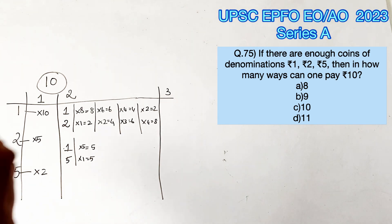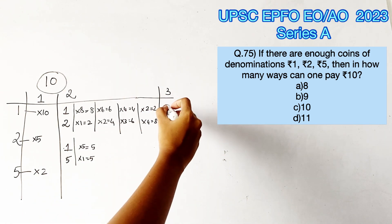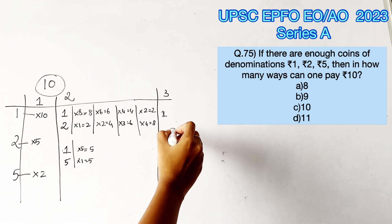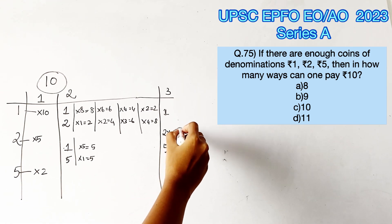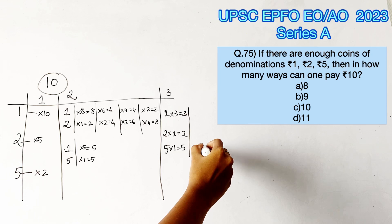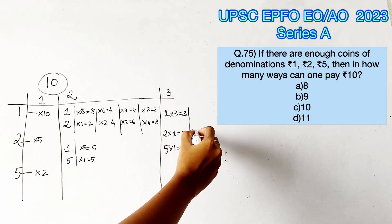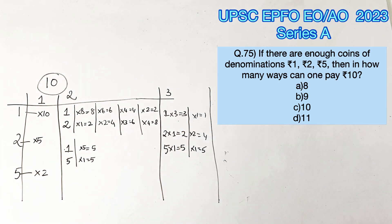Lastly, we consider the case where we take all 3 types of coins. Taking one 5-rupee coin and one 2-rupee coin leaves 3 rupees, which can be filled with 1-rupee coins. Taking one 5-rupee coin and two 2-rupee coins leaves 1 rupee, which can be filled with a 1-rupee coin.